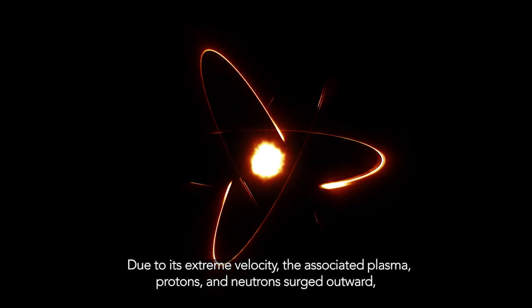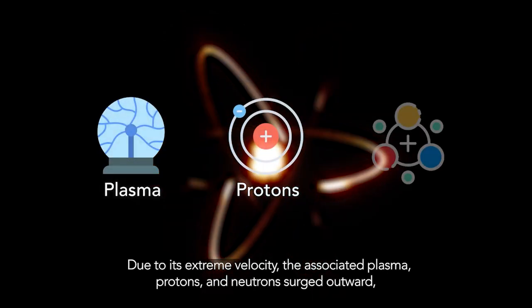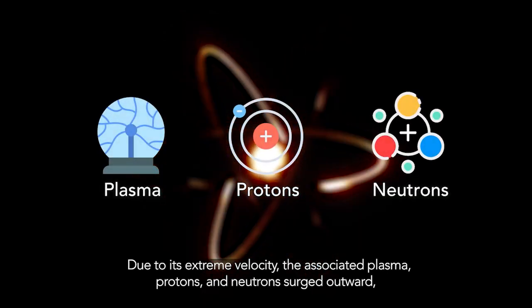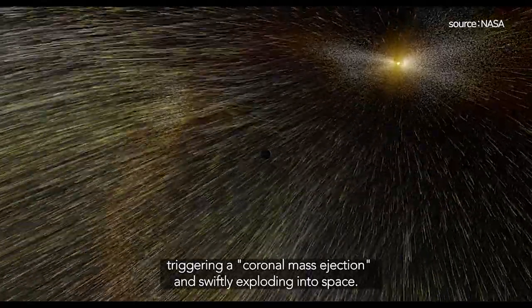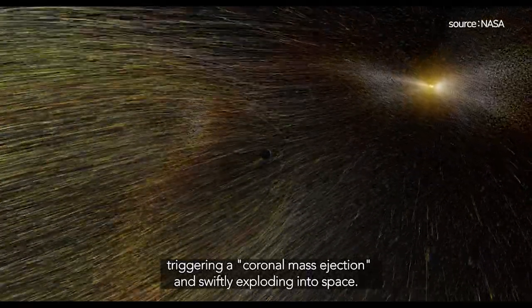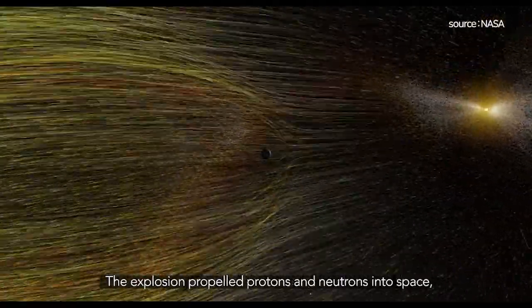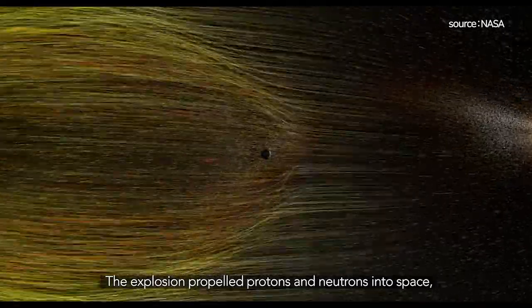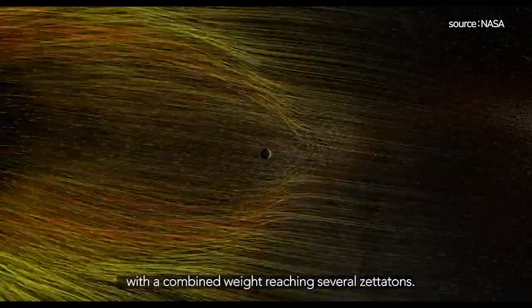Due to its extreme velocity, the associated plasma, protons, and neutrons surged outward, triggering a coronal mass ejection and swiftly exploding into space. The explosion propelled protons and neutrons into space, with a combined weight reaching several zetatons.